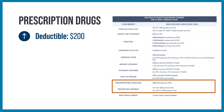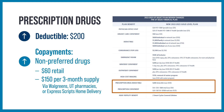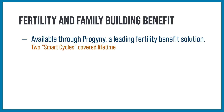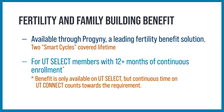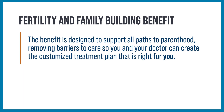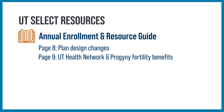The prescription drug deductible increases to $200. The co-payment for non-preferred drugs increases to $60 retail or $150 for a 3-month supply via Walgreens, UT Pharmacies, or Express Scripts Home Delivery. The plan design changes also include an exciting fertility and family building benefit through Progeny, a leading fertility benefit solution, exclusively for UT Select members with at least 12 months of continuous enrollment. The benefit is designed to support all paths to parenthood. All UT Select plan design changes are on page 8 of the Annual Enrollment and Resource Guide. Details about the UT Health Network and Progeny fertility benefits are on page 9.